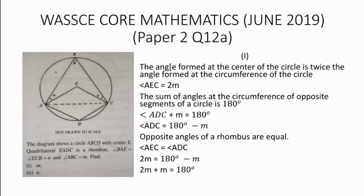Grouping like terms, we have 2m plus m equals 180 degrees, giving us 3m equals 180 degrees. Making m the subject, we divide both sides by 3, giving us m equals 60 degrees.